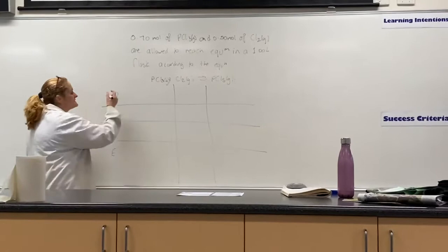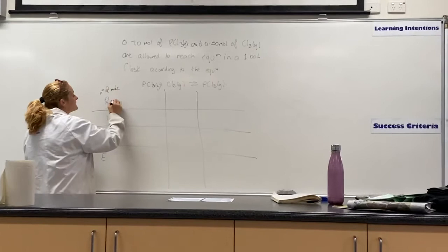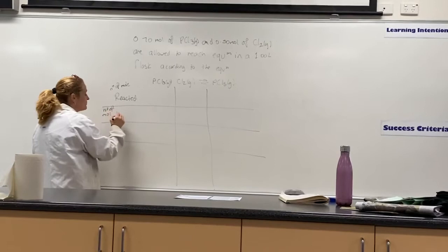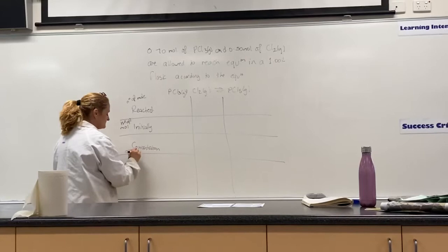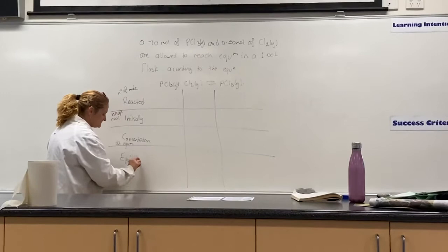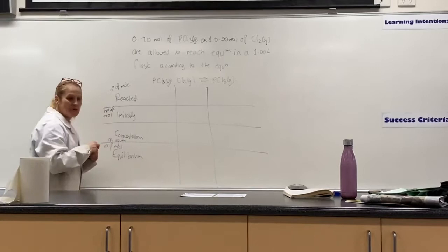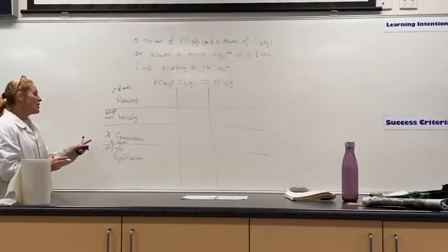So this, the R stands for - these are all in number of moles. So this stands for the number of moles that has reacted. This is the number of moles that you have initially. This is actually the concentration, not the change. This is the concentration at equilibrium. And the E stands for the equilibrium, but it's the number of moles at equilibrium. So the only one that's not a number of moles is the concentration. And in this one I would always write the volume.